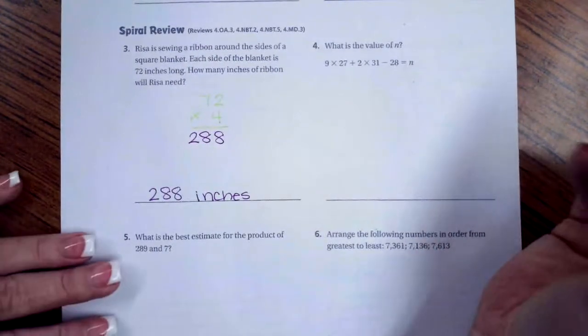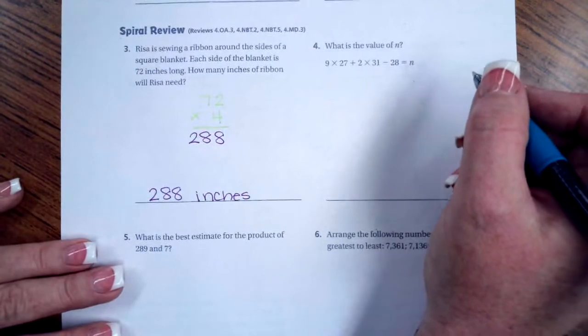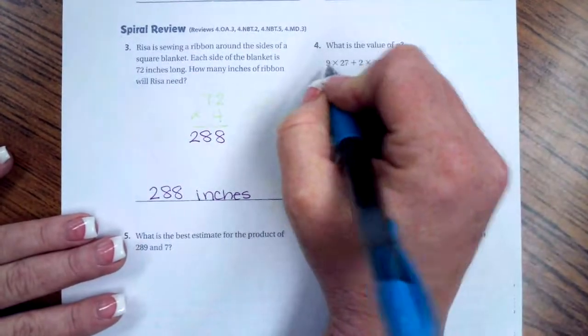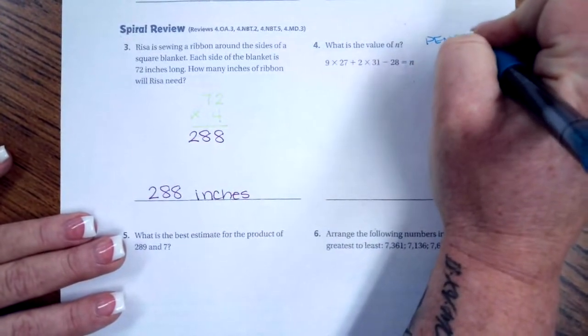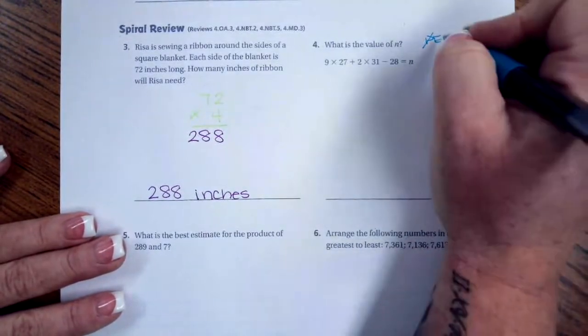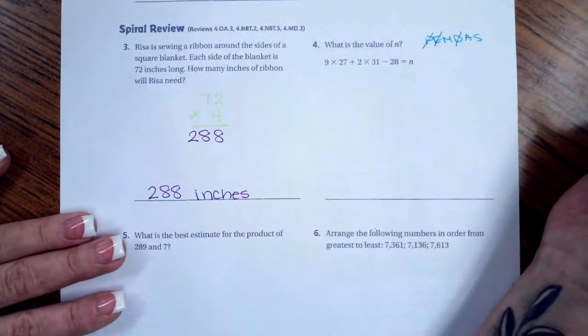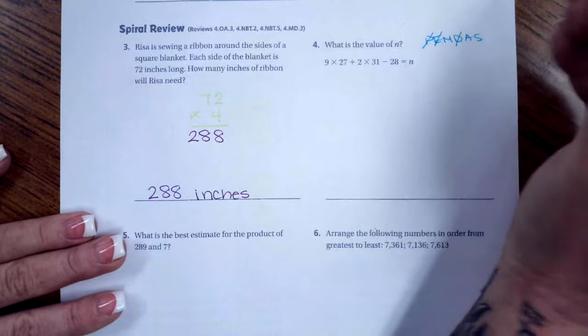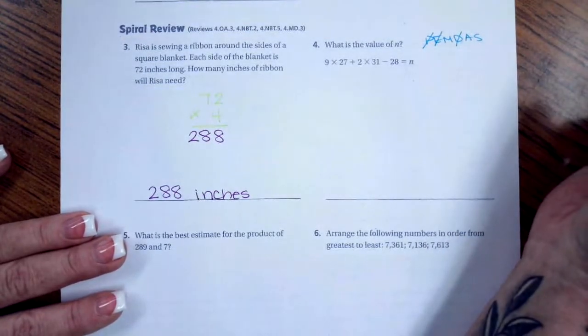Number 4. What is the value of N? So the very first thing that we're going to do is we're going to go ahead and combine our like terms first. Well, we're using PEMDAS, or please excuse my dear Aunt Sally. We don't have any parentheses in this. We don't have any exponents. We don't have any division. But we do have multiplication, addition, and subtraction. So I've crossed off what I don't have, so now I know what order I need to do the rest in.